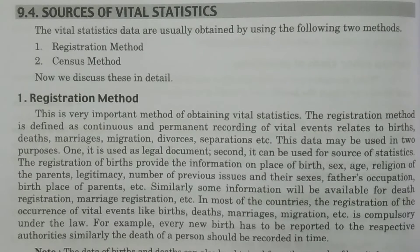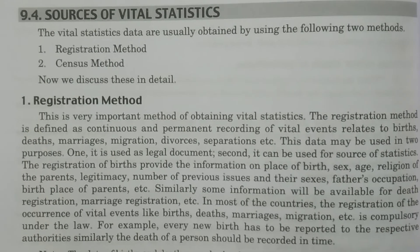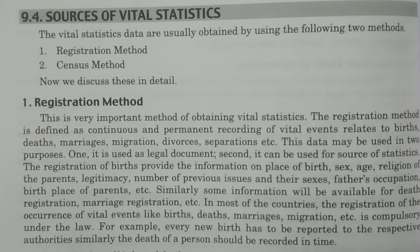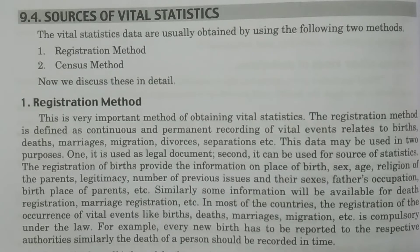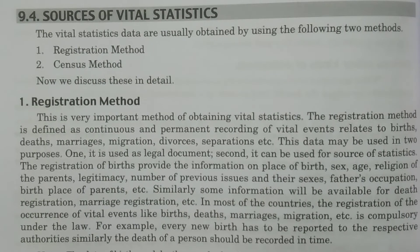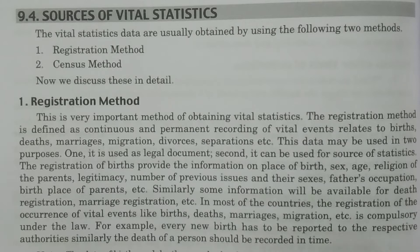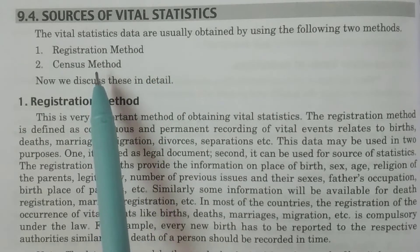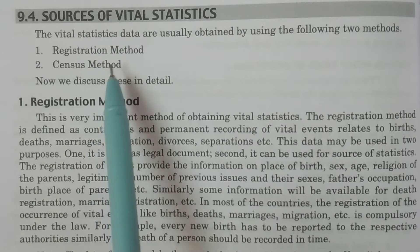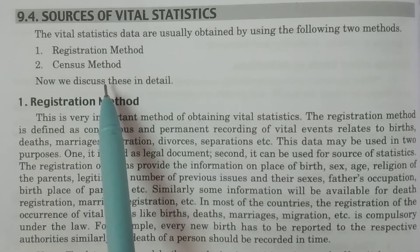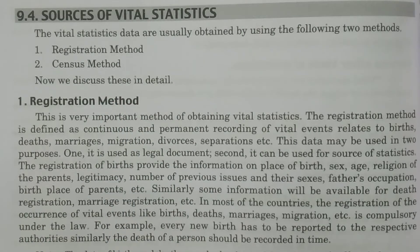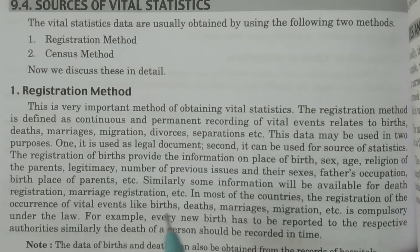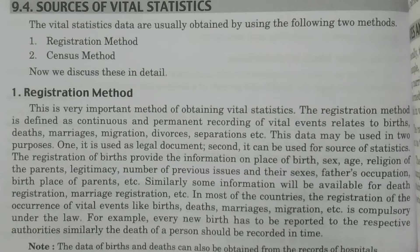Welcome to BSc Statistics students. In this class, I explain sources of vital statistics. So what are the main sources of vital statistics? There are two sources: registration method and census method. These are the two particular methods we use to collect vital statistics. We will discuss each method one by one.